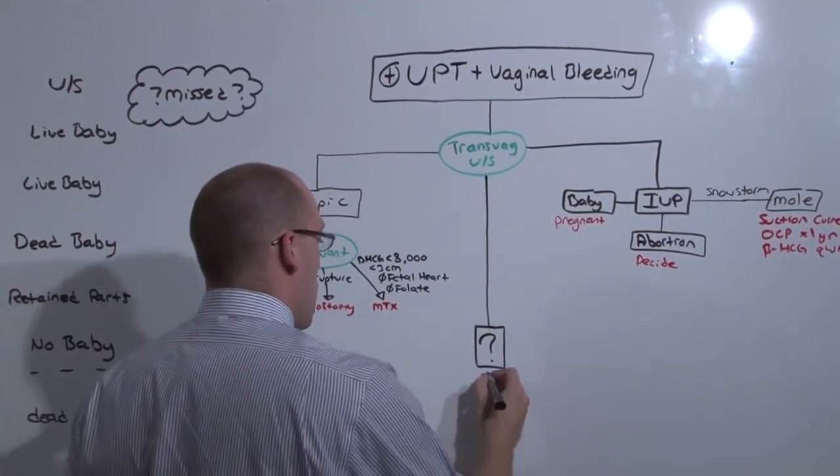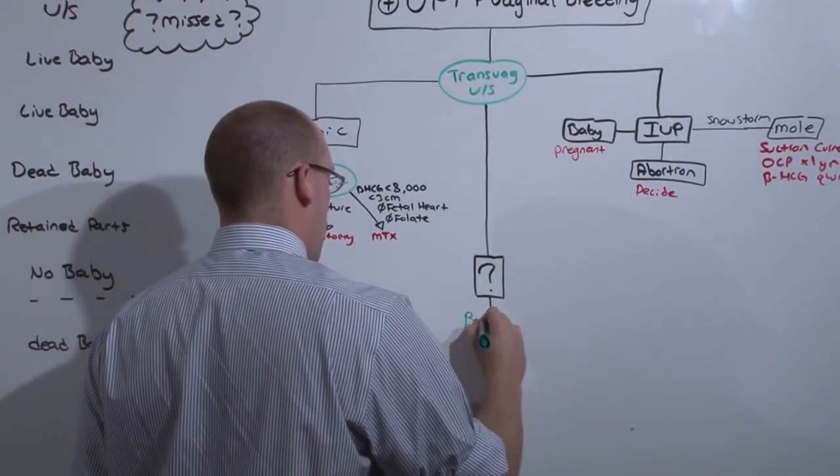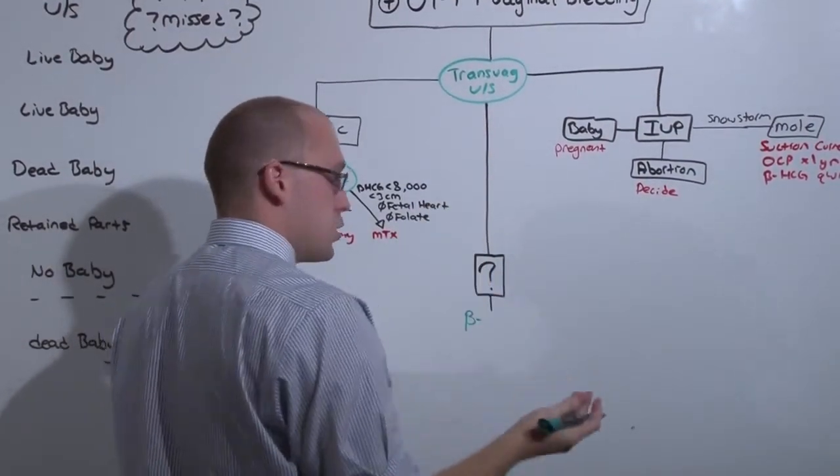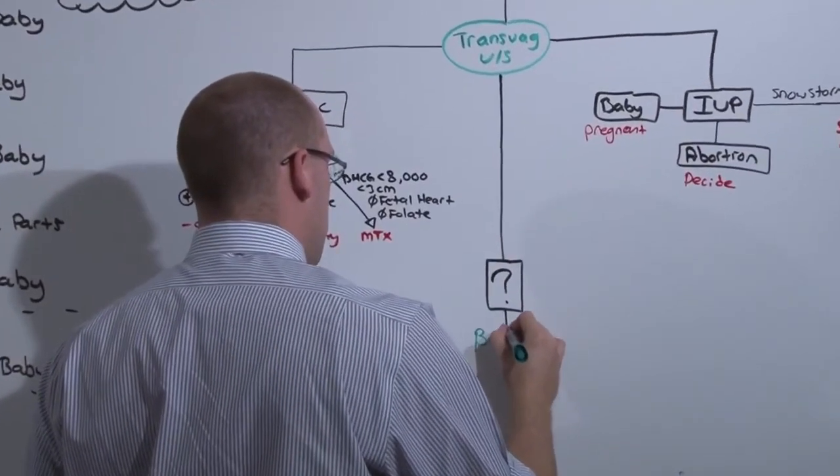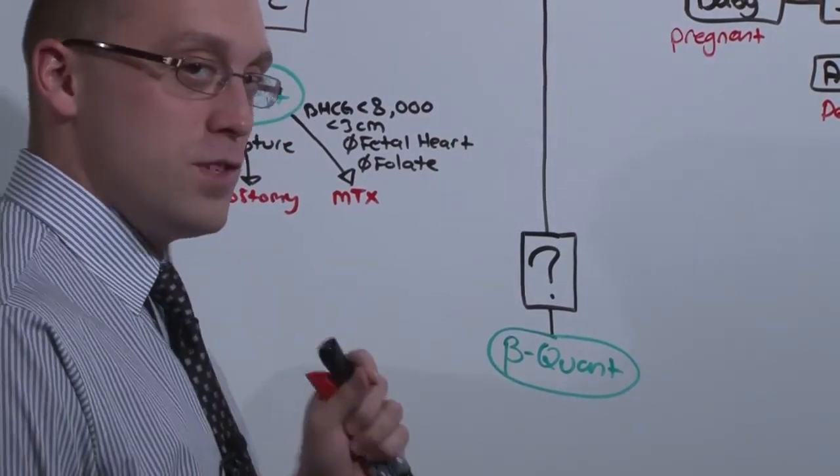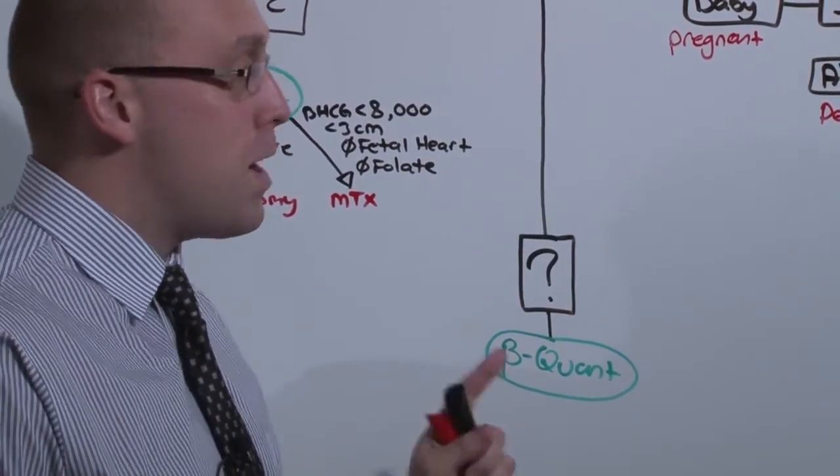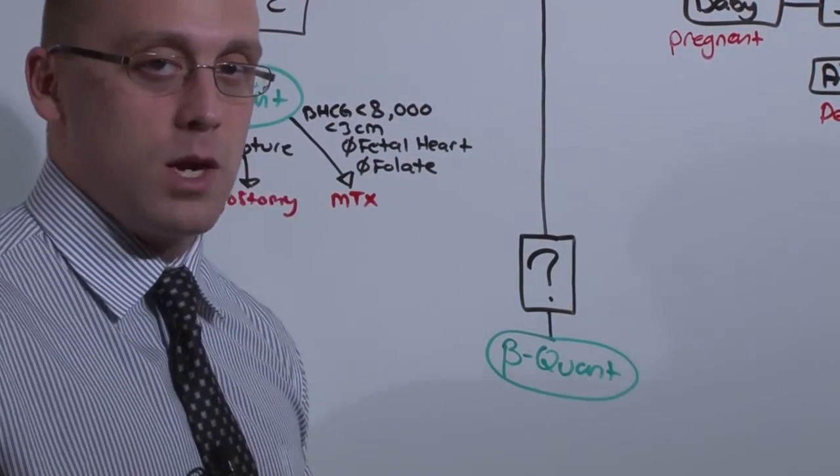What happens if you don't see anything? This is the time where the beta quant becomes incredibly useful. UPT says yes or no. Beta quant tells you how much. Because until the beta quant has reached 1500, you may not be able to see an intrauterine pregnancy, even with a transvaginal ultrasound.